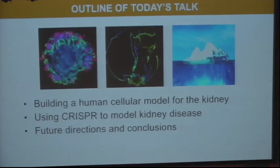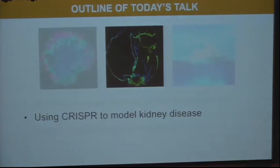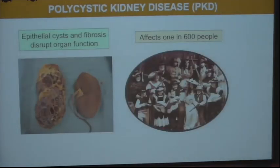In the shorter term, we're interested in using this to model disease. The focus is polycystic kidney disease. The characteristic feature of PKD is that epithelial cysts and fibrosis arise within solid organs and disrupt organ function — you can see an example of a kidney that has become massively enlarged, scarred over, with many large sacs inside it.